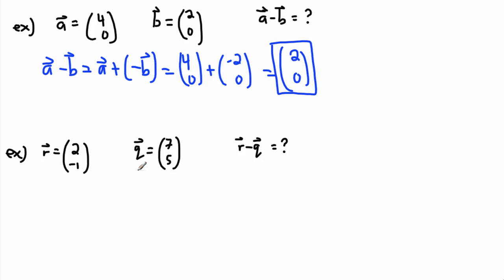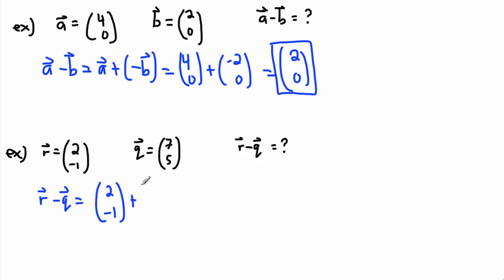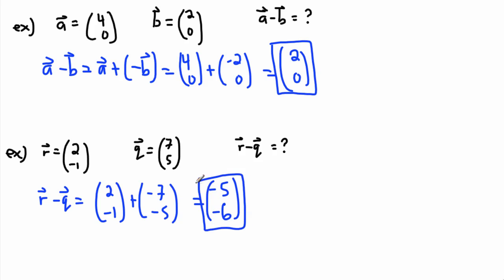There's not really much to it. We can even save some time and do it all in one go. If you get a little bored of adding the negative, it's okay to cut the corner. So if I want r minus q — that's 2, negative 1 — I'm going to say plus negative 7, negative 5, because I just have to change the sign of each of these. That means 2 minus 7 is minus 5, and negative 1 minus 5 is minus 6. And there we go, I'm all done.